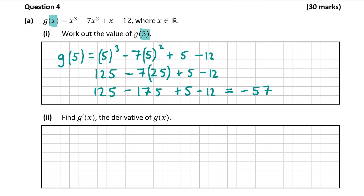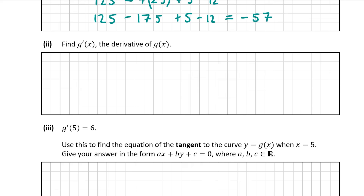Now let's look at part A2, which wants us to find the derivative of g of x. When differentiating, if you have an x term to the power of 3, you bring the 3 to the front and multiply it by whatever number is in front — if there's no number, that's just 1, so 3 times 1 is 3. You keep the x and minus 1 from the power, giving 3x squared. So differentiating x cubed gives 3x squared.